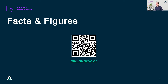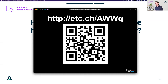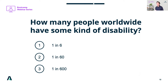I hope you're ready by now. So let's start. How many people worldwide would you think have some kind of disability? You can start voting. Most of you got it right — one in six persons worldwide have a disability. That's 15% of the worldwide population: one billion people. In Switzerland, that figure is even higher — it's 18 to 20% of the Swiss population.